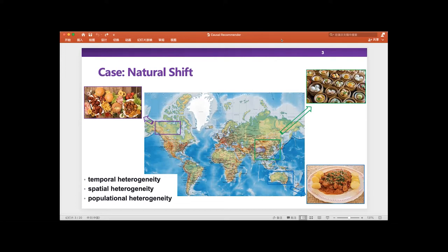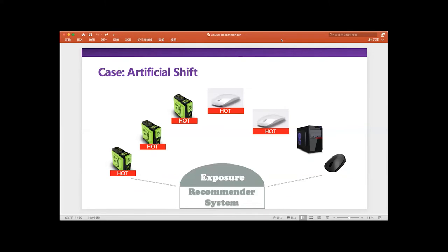For example, in different places in the world, people enjoy different kinds of food. So the heterogeneity will naturally bring the distribution shift of users or items, which makes our recommendation harder when we only need to recommend to our existing users or items. Another shift is brought by the recommendation system itself. For example, the recommendation system prefers to recommend hot items to active users. This is called popularity bias, which causes a problem — some new coming items are hard to be exposed to users.